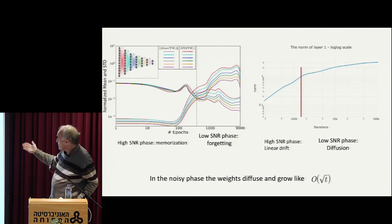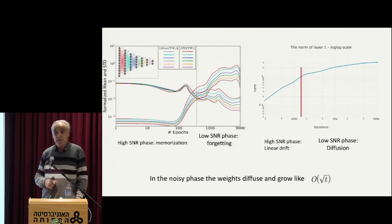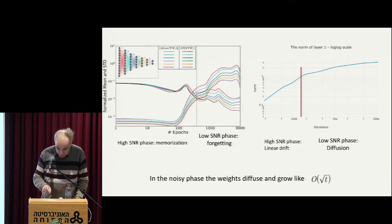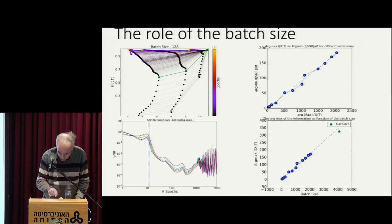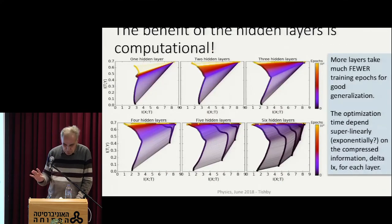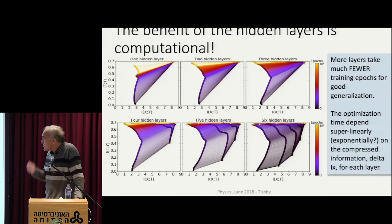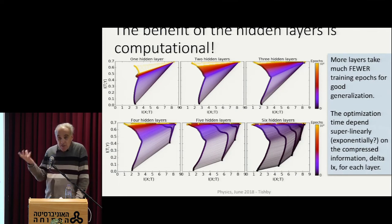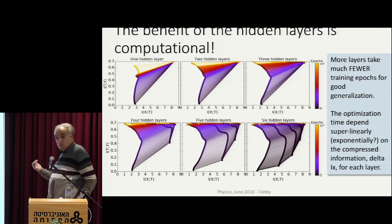Diffusion random walk — the distance grows like square root of t or lower. So that's a very nice independent verification that there are indeed two different behaviors of the gradient. This is true for all networks that we checked and all layers. The punchline of the story — and this is a completely new result — is that this explains the prediction that we had a year ago: when you add layers to the network, you see it in this picture — with one hidden layer you don't get to very high prediction, it takes forever; but with six layers, you very quickly get there.